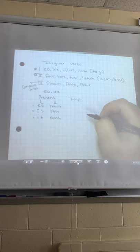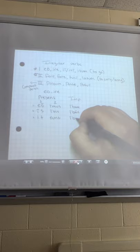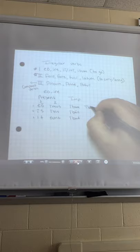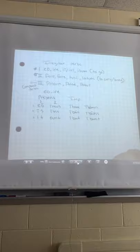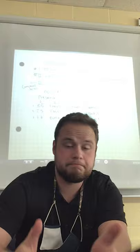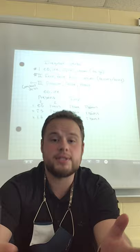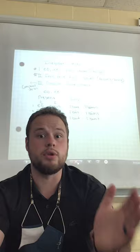For the imperfect tense, we have ibam, ibas, ibat, ibamus, ibatis, ibant. For the imperfect tense for eo, ire, the same thing. I stem plus our imperfect endings. So ibam, ibas, ibat, ibamus, ibatis, ibant. Not so bad, not so hard so far. Just weird stem, endings are the same. So let's do the future tense.